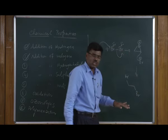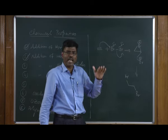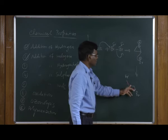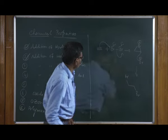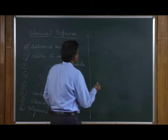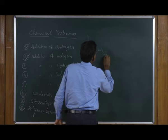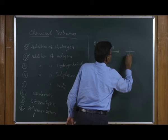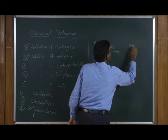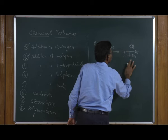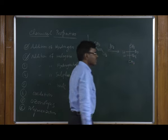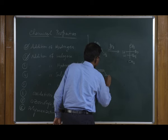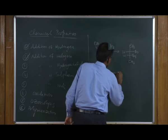If the Br⁻ attacks anti to the first bromine, you get the 1,2-dihaloalkane. This reaction is also stereospecific — the addition of bromine is an anti addition. For example, if you react trans-2-butene with bromine you get 2,3-dibromobutane. On the other hand, if you react cis-2-butene with bromine it can lead to a mixture of enantiomers.